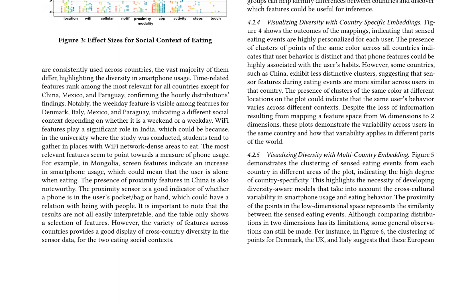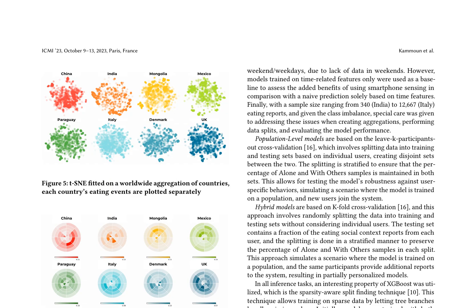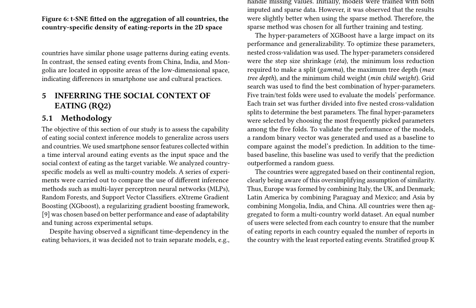The study highlights the importance of considering cross-cultural variability in smartphone usage and eating behavior. It demonstrates that features like proximity, app usage, and Wi-Fi signals vary significantly across countries, indicating distinct social contexts. The paper evaluates the performance of different inference models, such as XGBoost, MLPs, and random forests, to generalize across users and countries. The results show that XGBoost performed well, especially when using sparse data and optimizing hyperparameters through nested cross-validation.